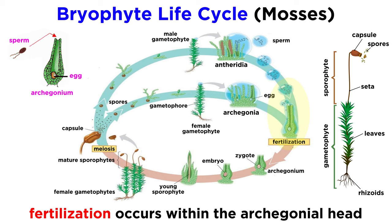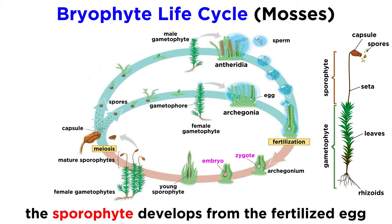When there is sufficient water in the environment, the sperm cells can swim to the archegonial heads and fertilize the egg cells. Once an egg is fertilized, the zygote, and then embryo, develops inside the venter where the egg was formed. Eventually, the embryo will emerge from the neck of the venter, and grow into a diploid sporophyte.